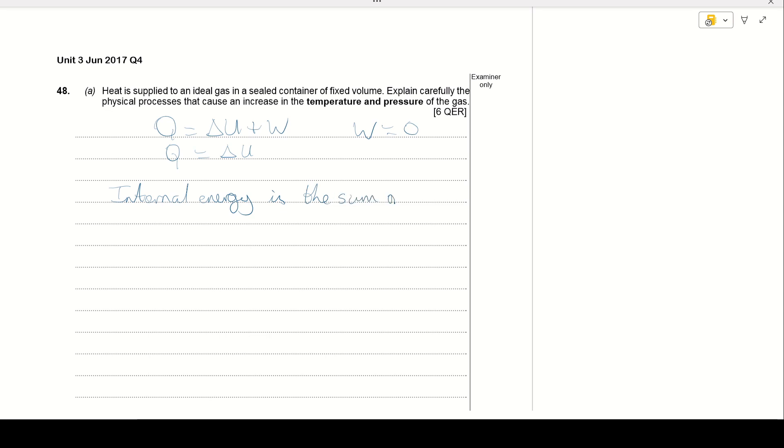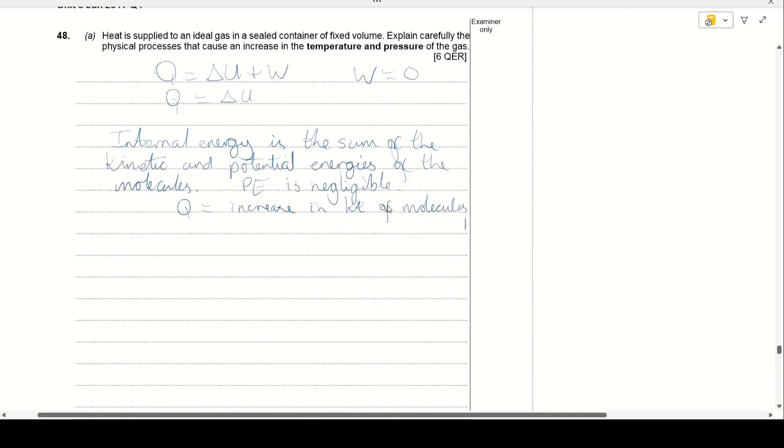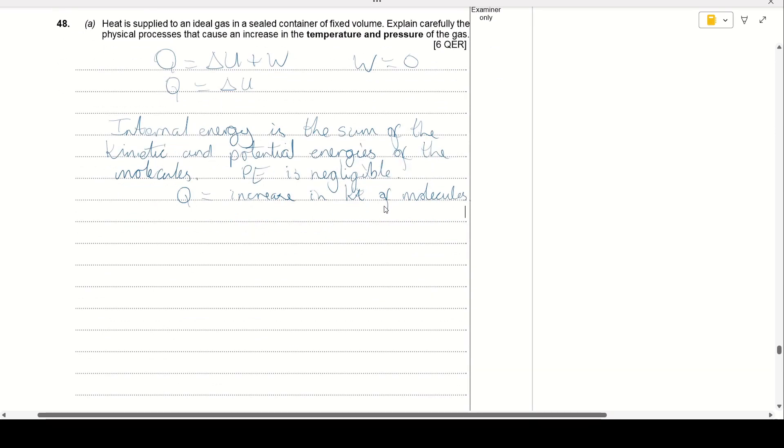Now for a gas, the potential energy, I'll just call it P to save a bit of writing, is negligible because our gas molecules are far apart on average. So what this basically means is that Q here is going to be leading to an increase in the kinetic energy of the molecules. Now if our molecules have more kinetic energy, then we see that on a macroscopic whole world scale as a rise in temperature of the gas. A lot of people get this the wrong way around.